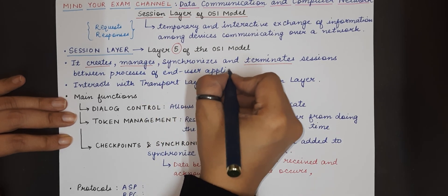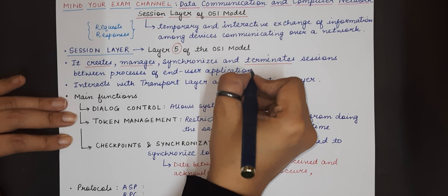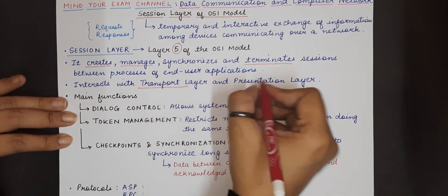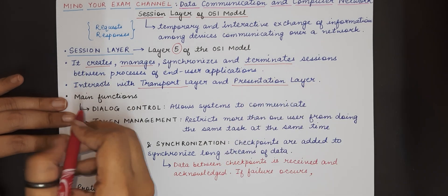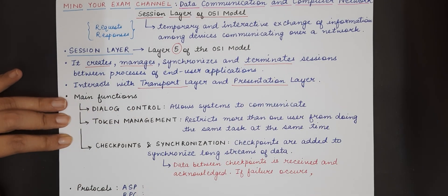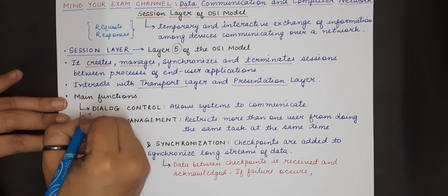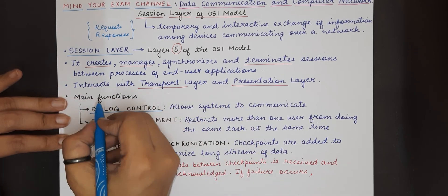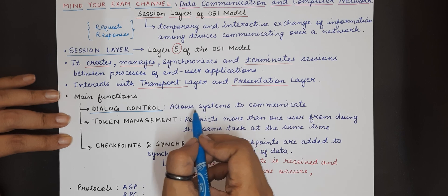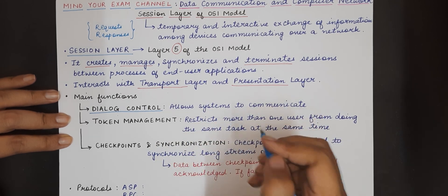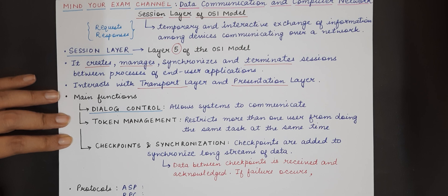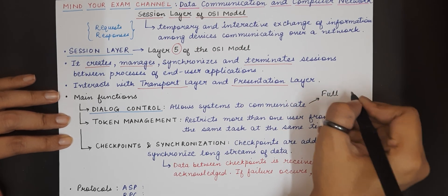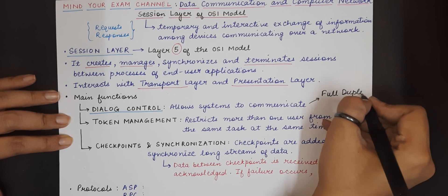So these are two important characteristics of the session layer. Now let us come to the functionalities that are performed by the session layer. The first functionality includes dialogue control. Dialogue means the exchange of data that is happening. Session layer allows the interacting systems to communicate with each other and this communication can either be full duplex or it can be half duplex.